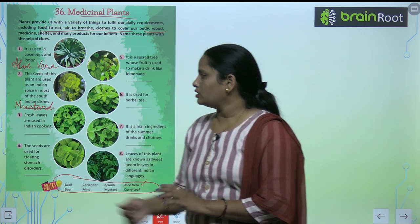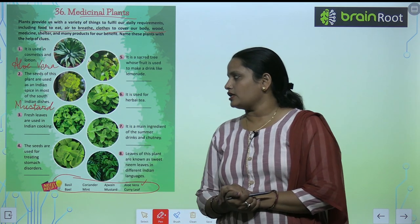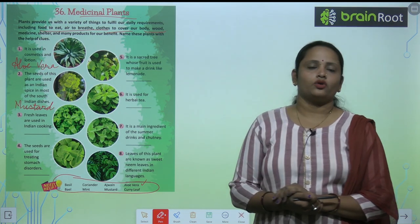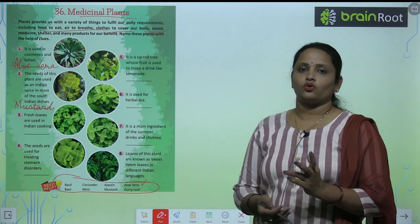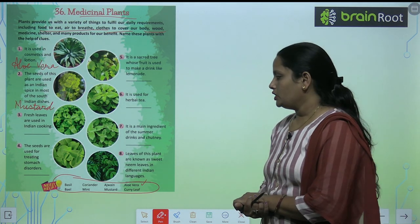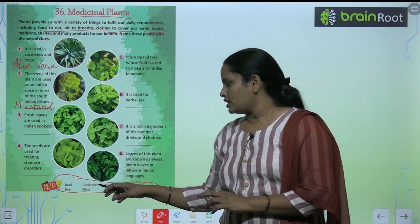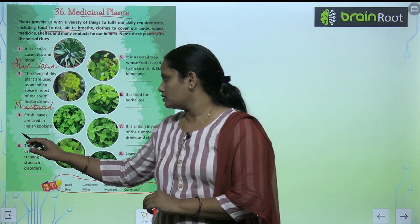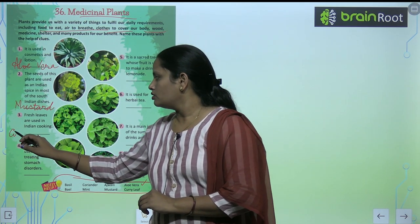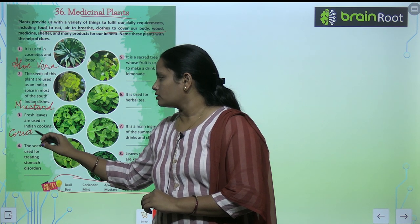Third one: fresh leaves are used in Indian cooking. This plant's fresh leaves are used in Indian cooking. So this is coriander.